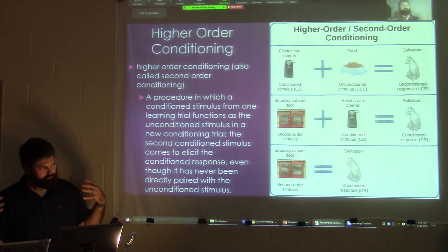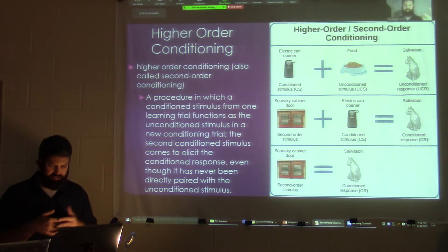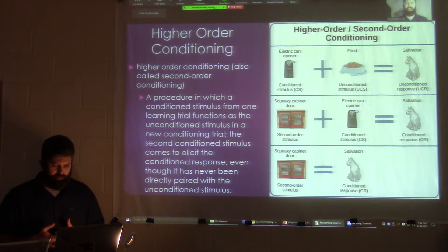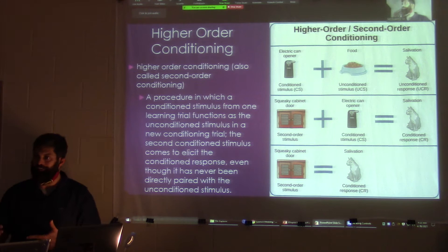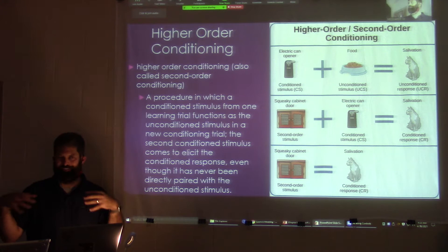Higher order conditioning is basically whenever you don't realize that classical conditioning has taken place. You could figure it out through the UCS and the CS. Looking at this image — the can opener and the food are paired together, both eliciting drooling from the cat. But the can opener is inside a squeaky cabinet door, so every time that door opens, the cat hears it, understands the can opener is coming, and then the food. That's higher order conditioning.